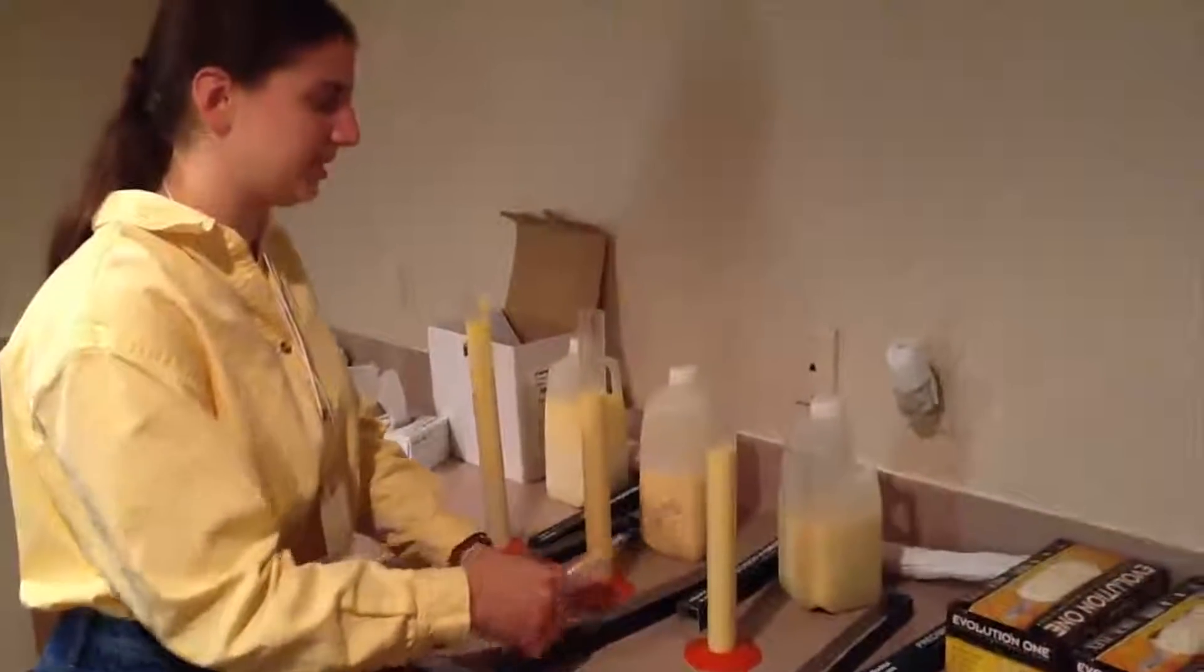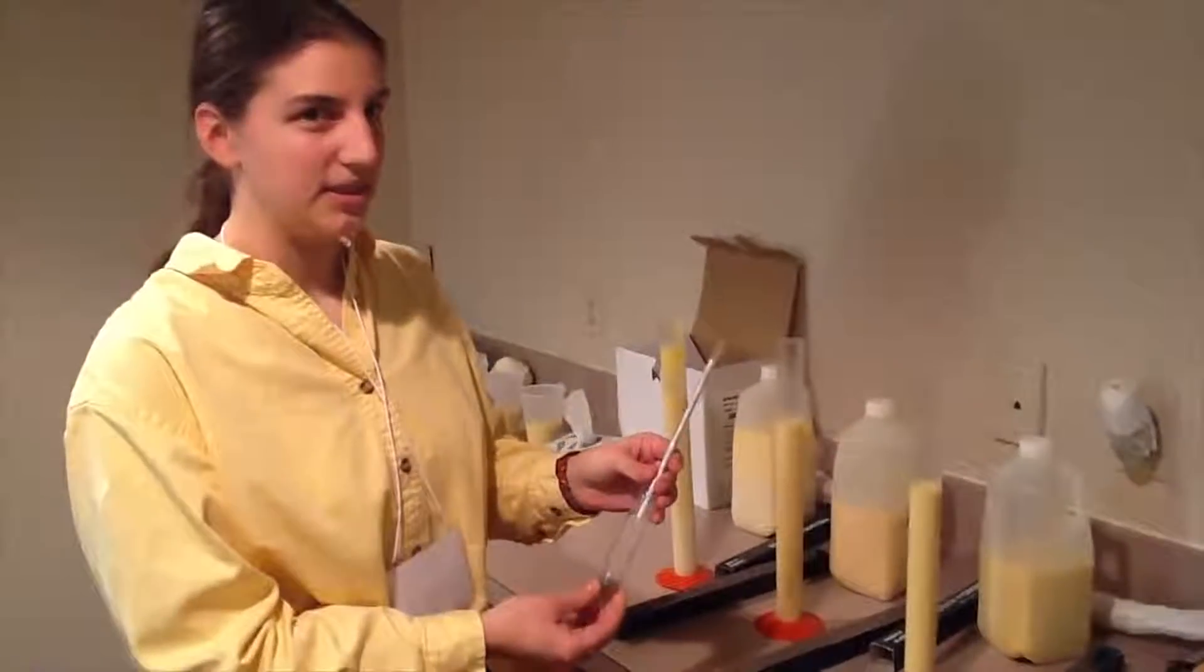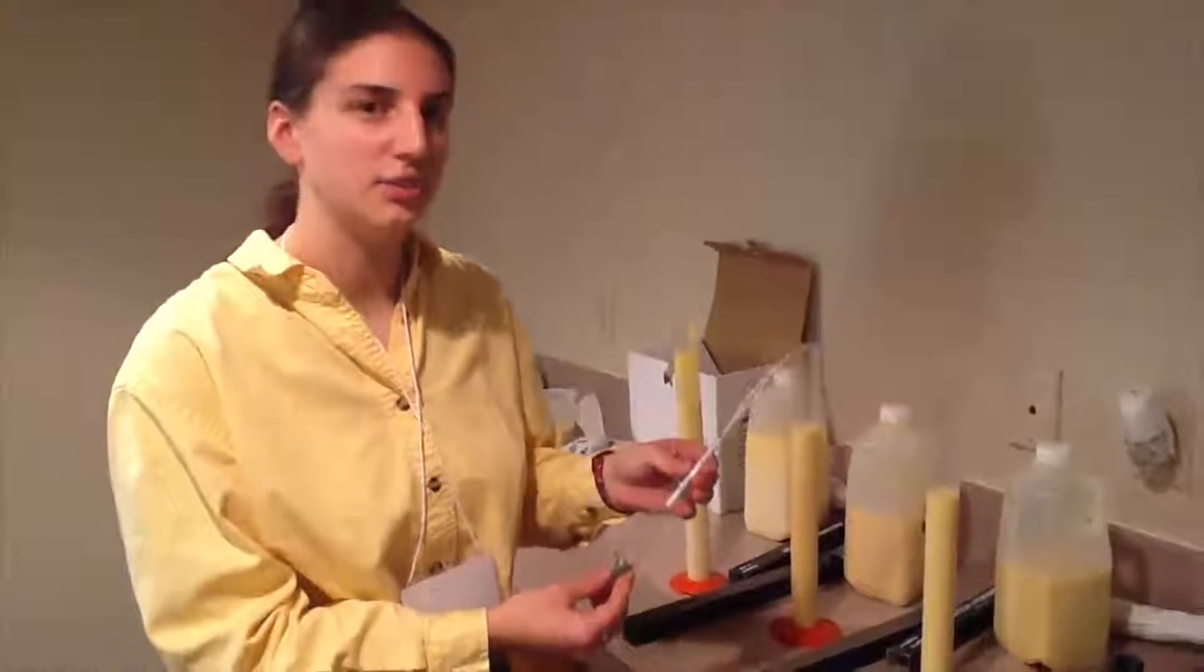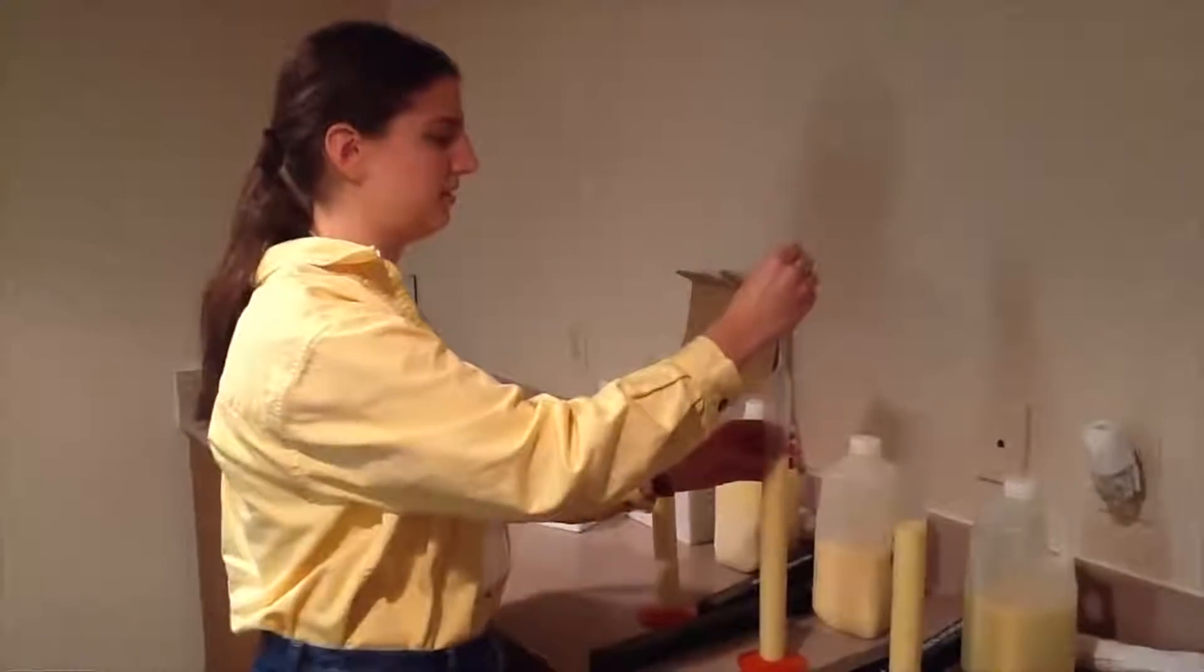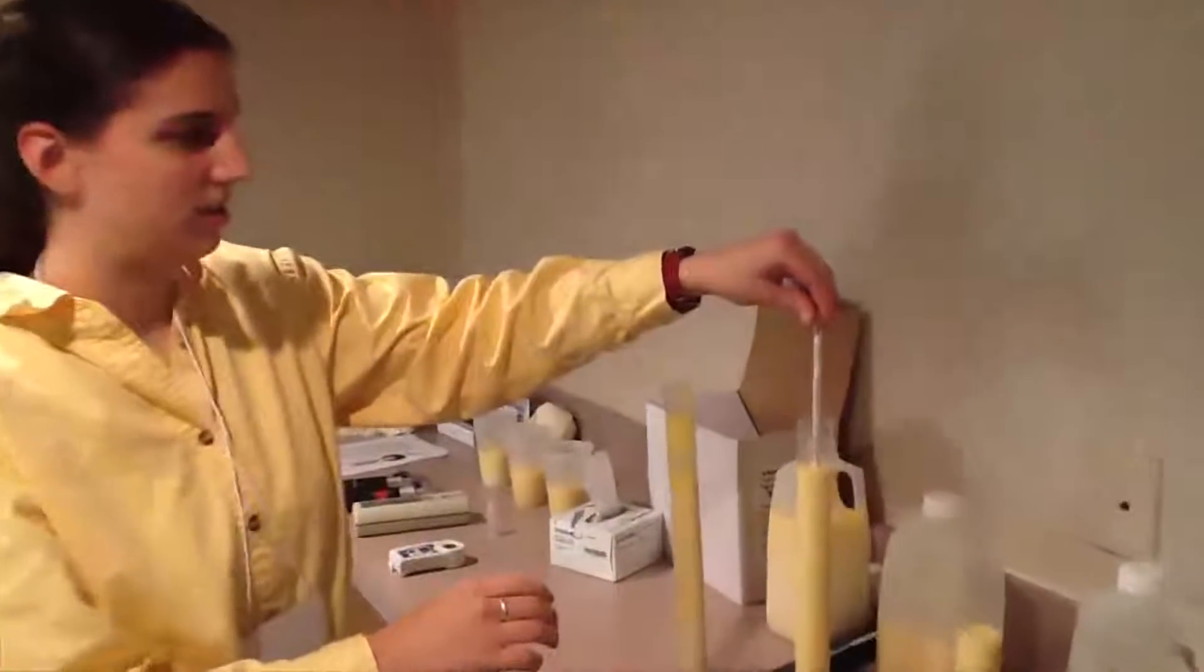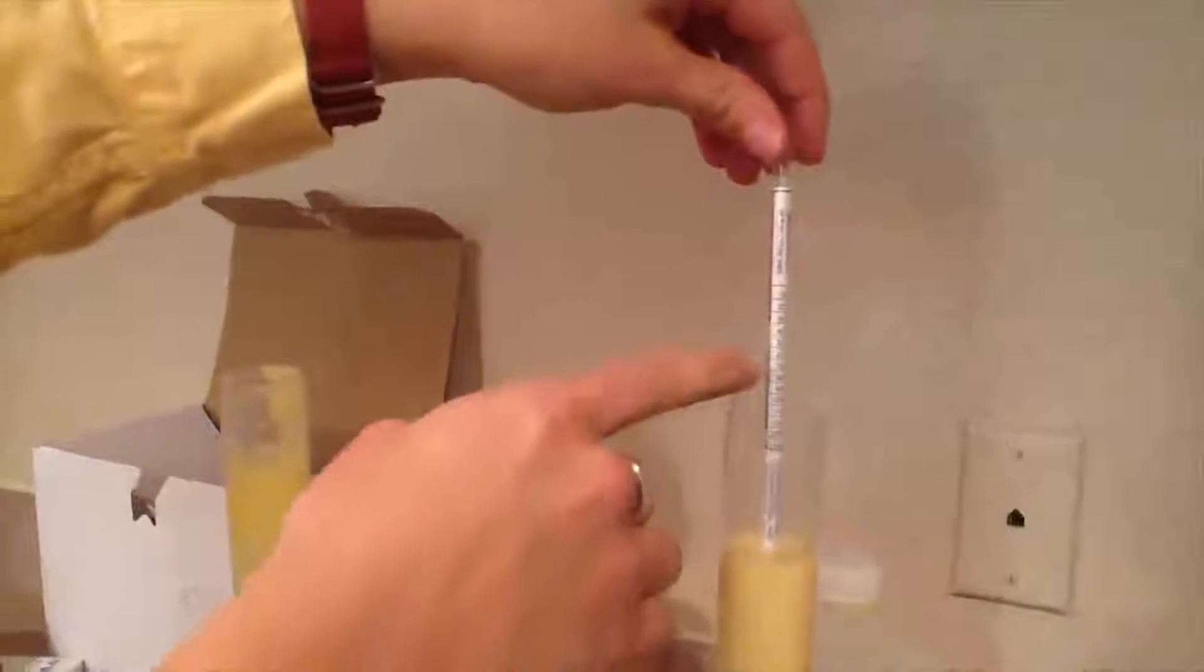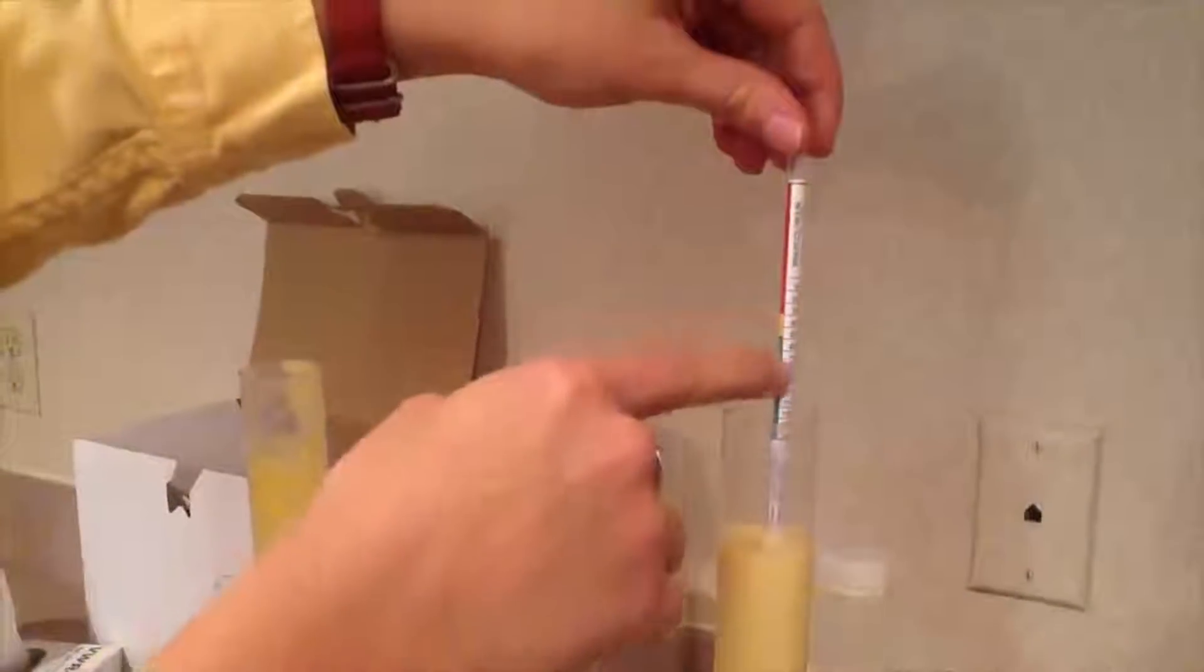So one of the first things that a lot of dairy farmers use is the colostrometer. This measures the IgG level of the colostrum and it's based on density. All you need to do is drop the colostrometer in there and let it sink, and then there's a scale on the actual colostrometer. The goal is to be higher than 50, and you can see the green actually correlates to higher than 50. So if it's in the green range, it's good quality colostrum.